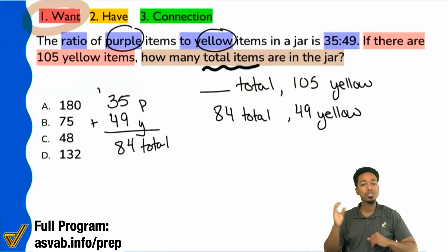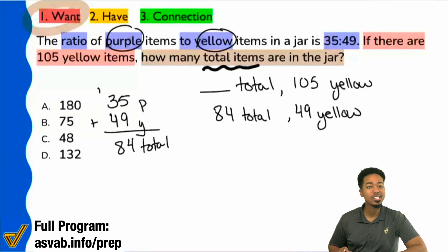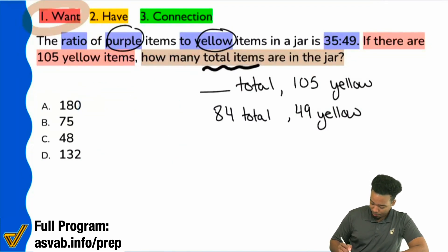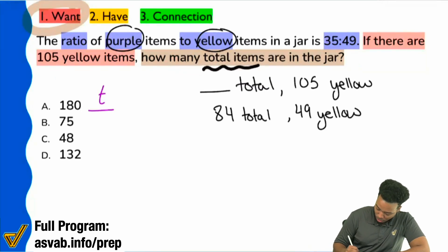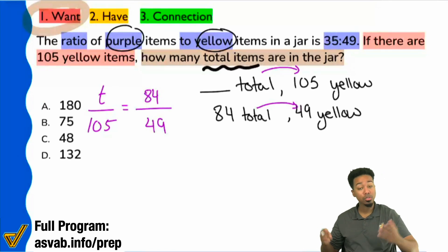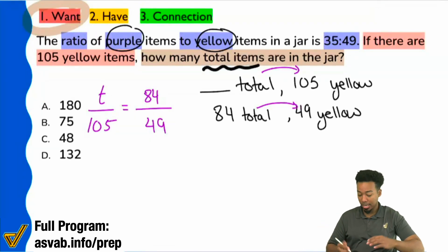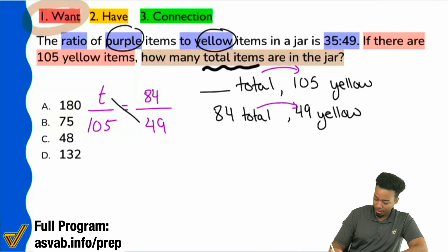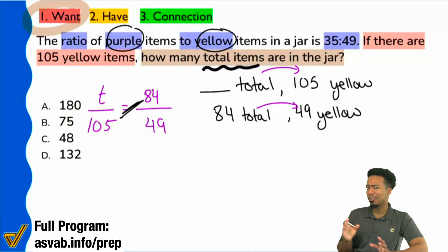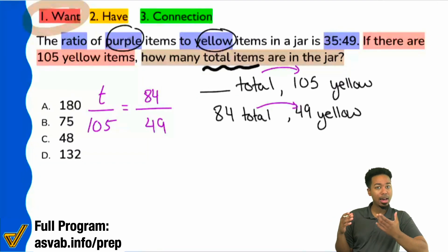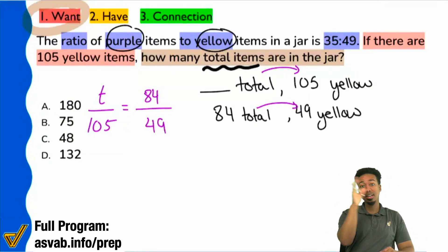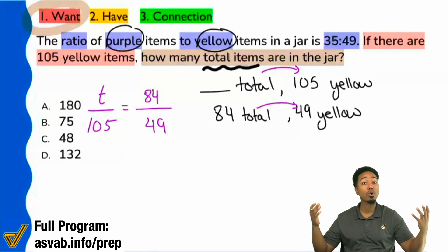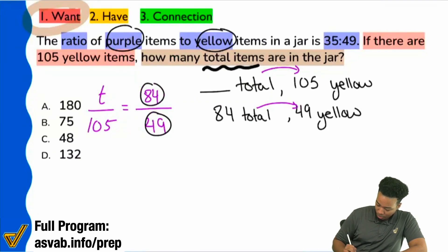Now that we're comparing total to yellow, total to yellow, I can create my proportion, solve it nice and easy, and I'm done for the day. We'll say: T total over 105 yellow equals 84 over 49. You can always resort to cross multiplication and division — you can absolutely do that. But I noticed this is going to be messy if I'm doing 105 times 84, so I won't. Instead, I'm going to see if I can simplify this proportion by dividing the same thing out of each numerator or each denominator. I noticed that 84 and 49 are both divisible by 7.